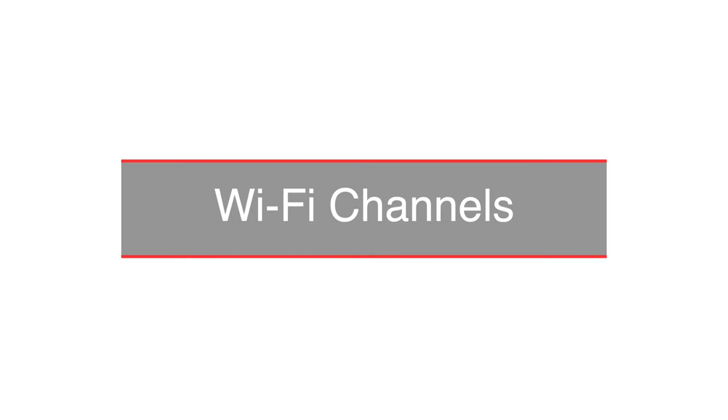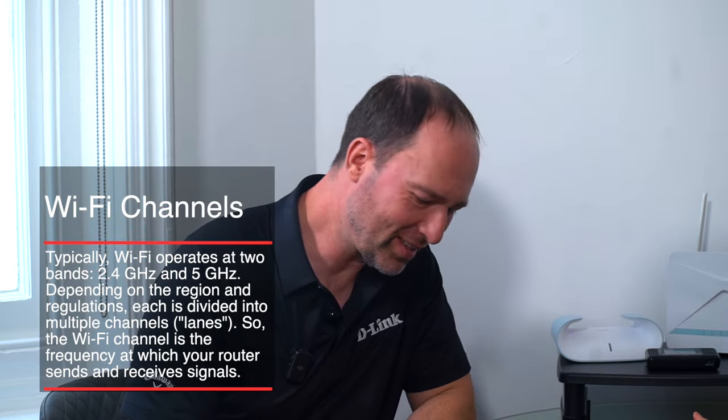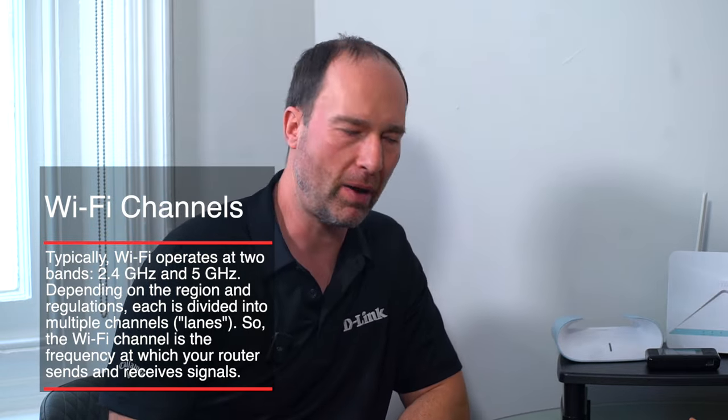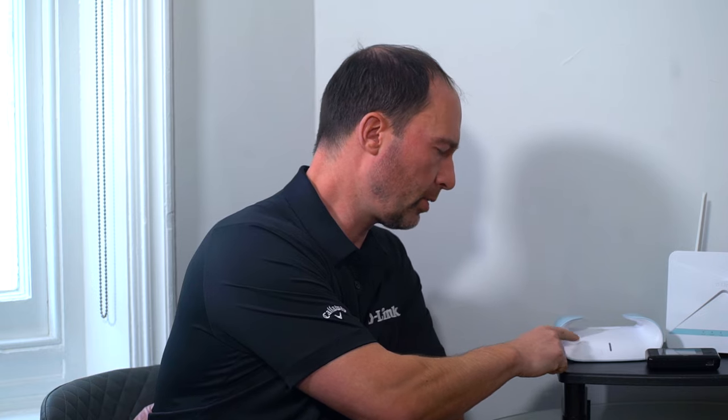Next is channels — not TV channels, but Wi-Fi channels. Similar to how 3G, 4G, and 5G work in mobile, Wi-Fi channels include 2.4 GHz, 5 GHz, and the newer 6 GHz. The 2.4 GHz band has been around for years and has the furthest broadcasting range because it's the slowest channel. Your router will typically broadcast on both 2.4 and 5 GHz.